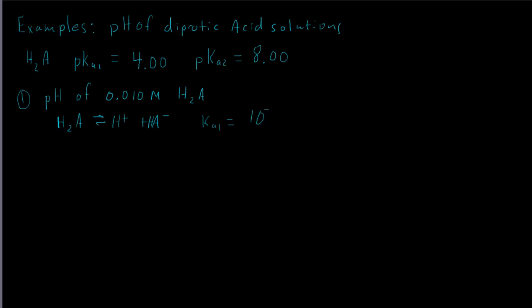Ka1 equals 10 to the negative pKa1 power, so that's 10 to the minus 4. We go through and solve the weak acid problem using our RICE table in the usual way. We get that Ka1 equals x squared over the formal concentration minus x.